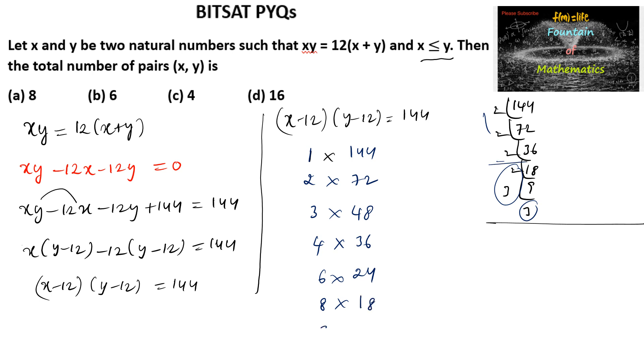We also have 9 times 16 and 12 times 12. So total we have 1, 2, 3, 4, 5, 6, 7, 8 possible ways we can express x minus 12 and y minus 12.